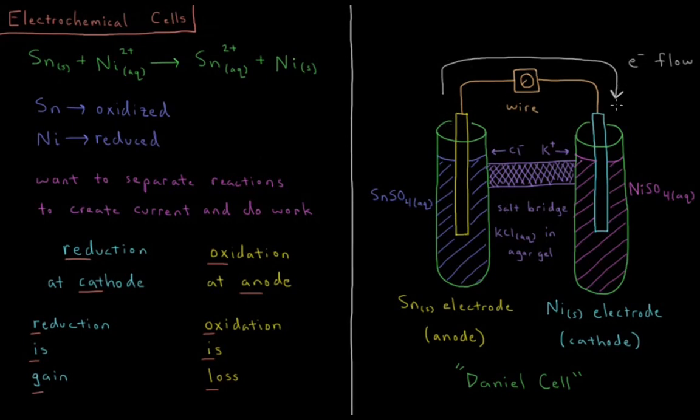So since we have a net negative charge flowing from left to right, the salt bridge has to balance that out by having a net positive charge flow to the right. So what will happen is potassium ions, potassium cations in the agar gel are going to flow into our cathode and chloride anions in the agar gel are going to flow to the left into the anode, balancing out our electrical charges and completing the circuit so that our charges can continue to flow.